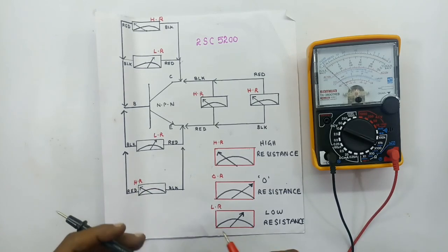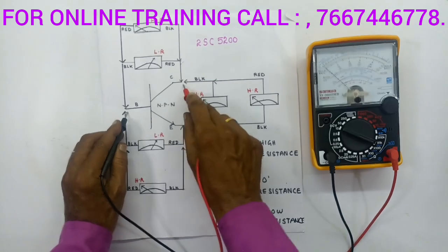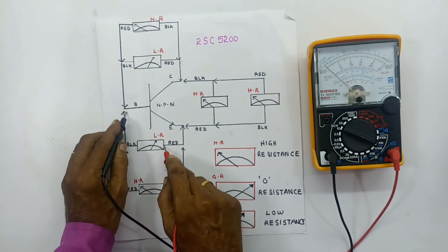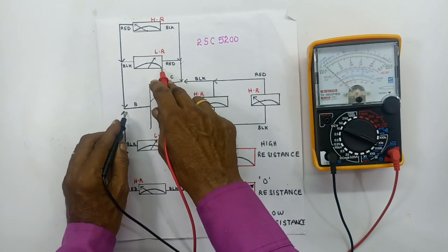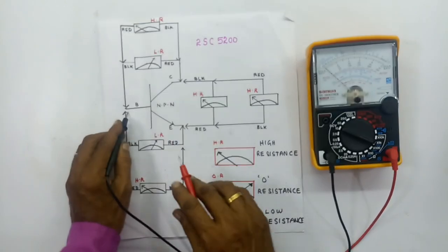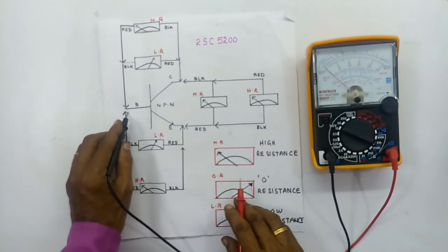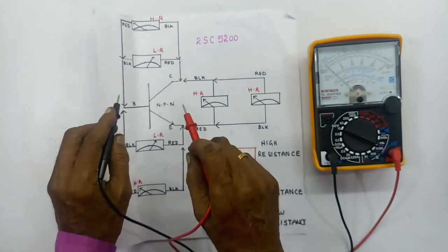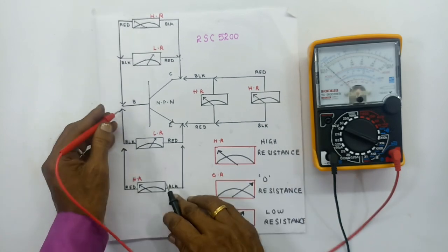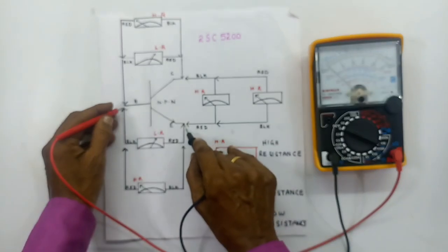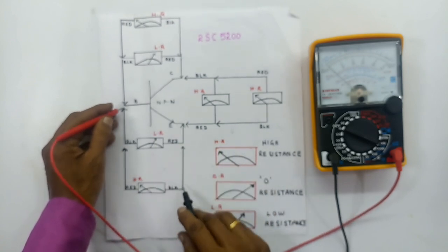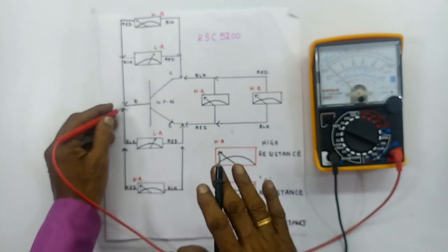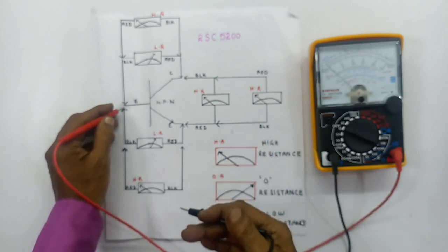In the base, there is a black probe. With the black probe on the base, the emitter and collector both show low resistance — the transistor is okay. If one shows zero resistance or one shows low resistance, that is a transistor fault. For NPN transistor, when you change the test with the red probe to the base, all three show high resistance.